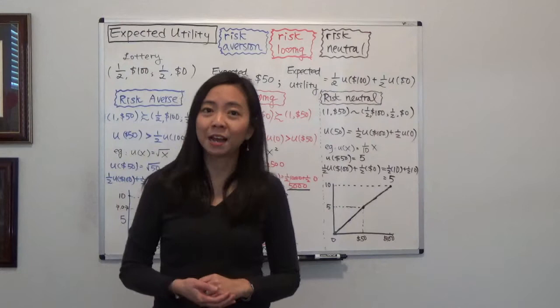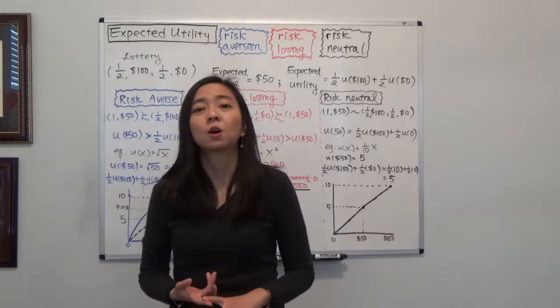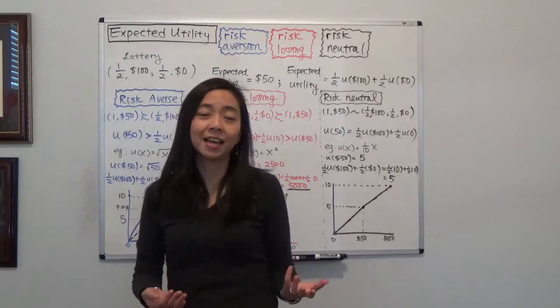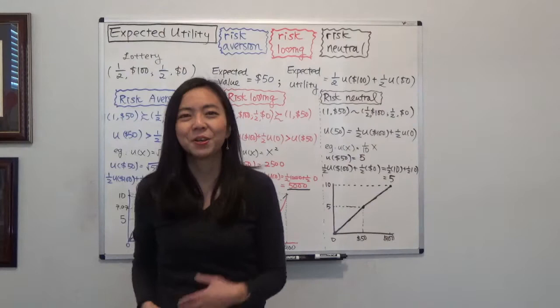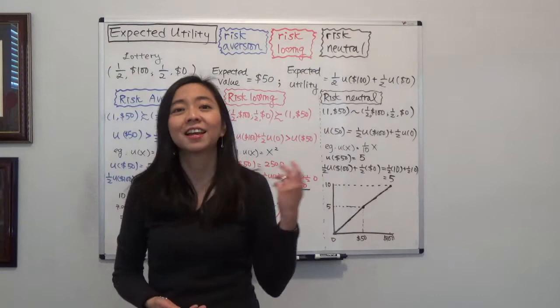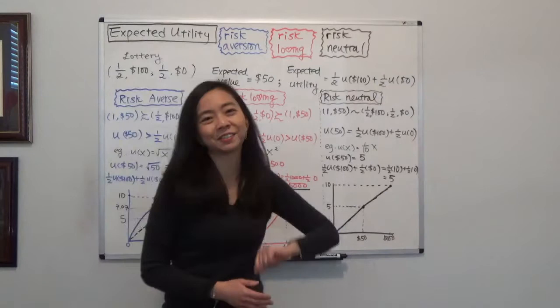I'm going to give you the bottom line first. Suppose you're given two options: one is a lottery with a half chance to get $100 and a half chance to get $0, or you can get $50 for sure. Which would you choose? If you choose $50, you are risk averse. If you prefer the lottery, you are risk loving. If you're indifferent between the two, you are risk neutral.